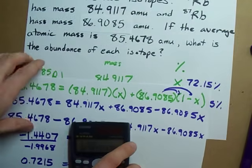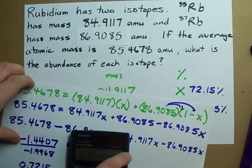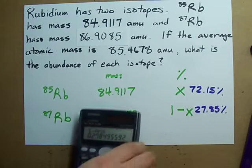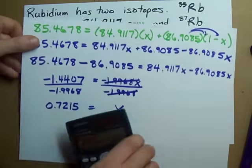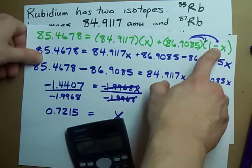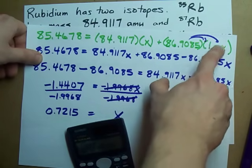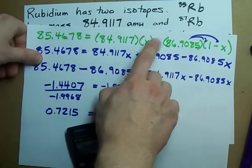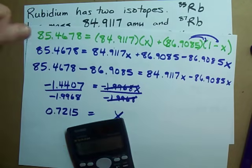So you can solve for missing abundances by, if you like, setting up one of these charts, allowing one of the isotopic abundances to be X, and making the other one however much is left when X is already accounted for. Best of luck!